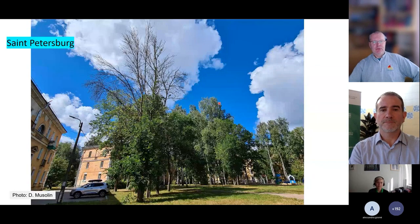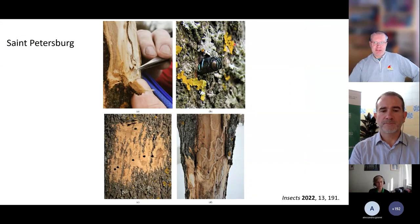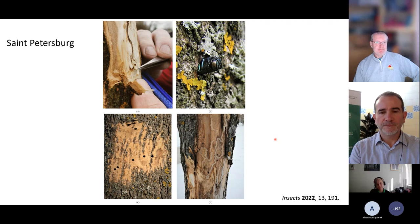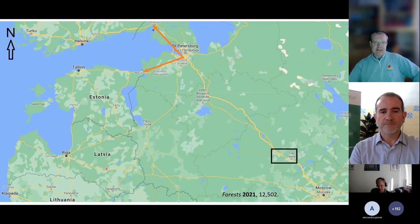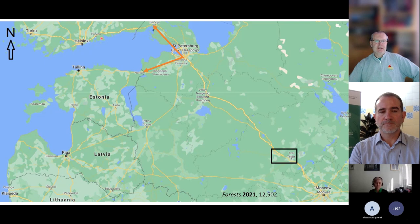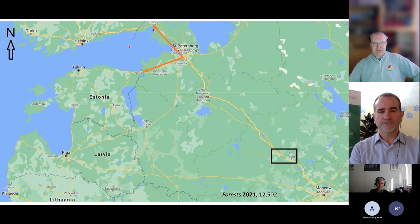A typical picture in St. Petersburg shows small squares, parks, or alleys heavily affected. The conclusion is that invasion from St. Petersburg to northern EU is possible, given its geographic proximity to Estonia and Finland and existing transport corridors. There are quite a lot of ash trees along the coast in Estonia and Finland. In the southwestern direction, there is a large continuous population extending from Moscow down to Ukraine. In 2019, the emerald ash borer invaded eastern Ukraine and started spreading further westward, continuing to expand in 2020 and 2021.